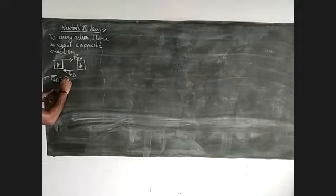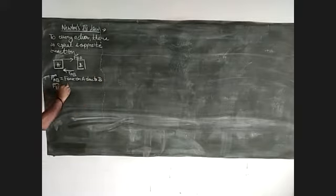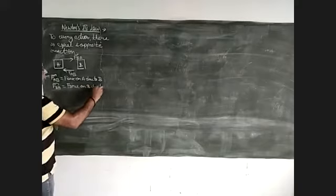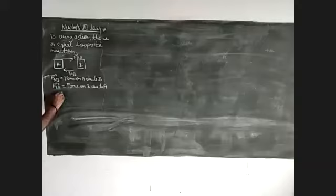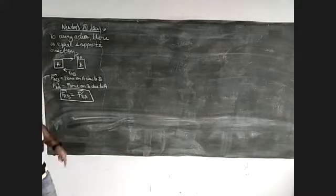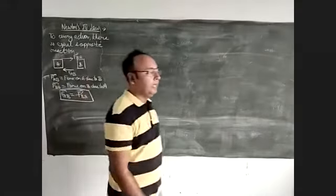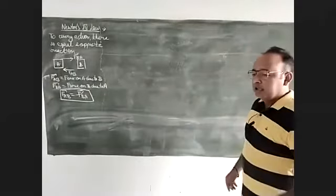F_AB means force on A due to B, and F_BA means force on B due to A. This is the meaning and how we read these notations. According to Newton's Third Law of Motion, these forces are equal in magnitude but opposite in direction, so we can write: F_AB = −F_BA. This is very important and we will use this in the next derivation.